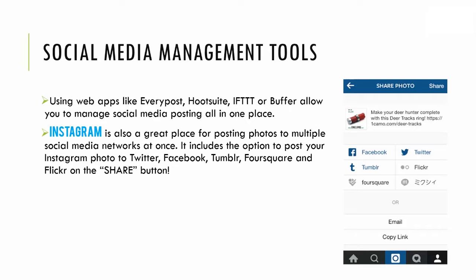The first one I like is Instagram — you can post your photo and description with a backlink, then select other social media platforms you want to post to simultaneously. For this I like to select Facebook, Tumblr, Twitter, Flickr, and Foursquare, and then create If This Then That recipes for my Tumblr to post to other social media platforms.